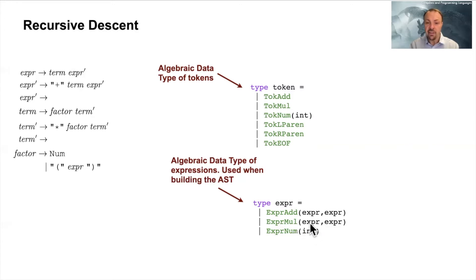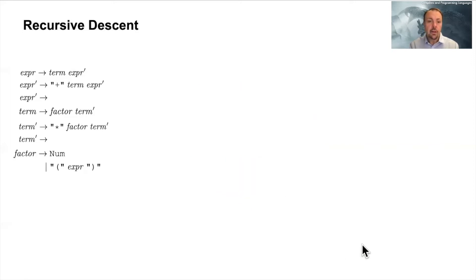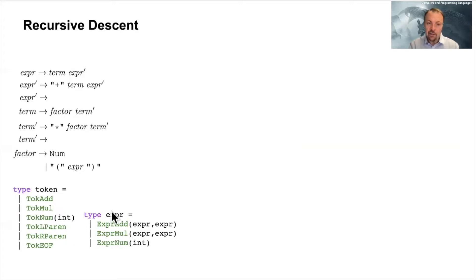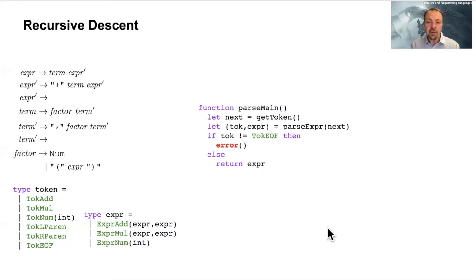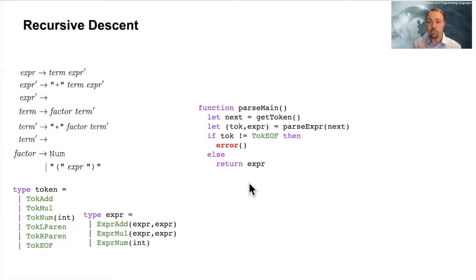You can see this is an algebraic data type that is recursively defined, with expressions referring to themselves. The first part is a parse function — the main function called to do the parsing — which should return an expression of this form. You get a tree back with additions, multiplications, and numbers that you can later evaluate or do something with.